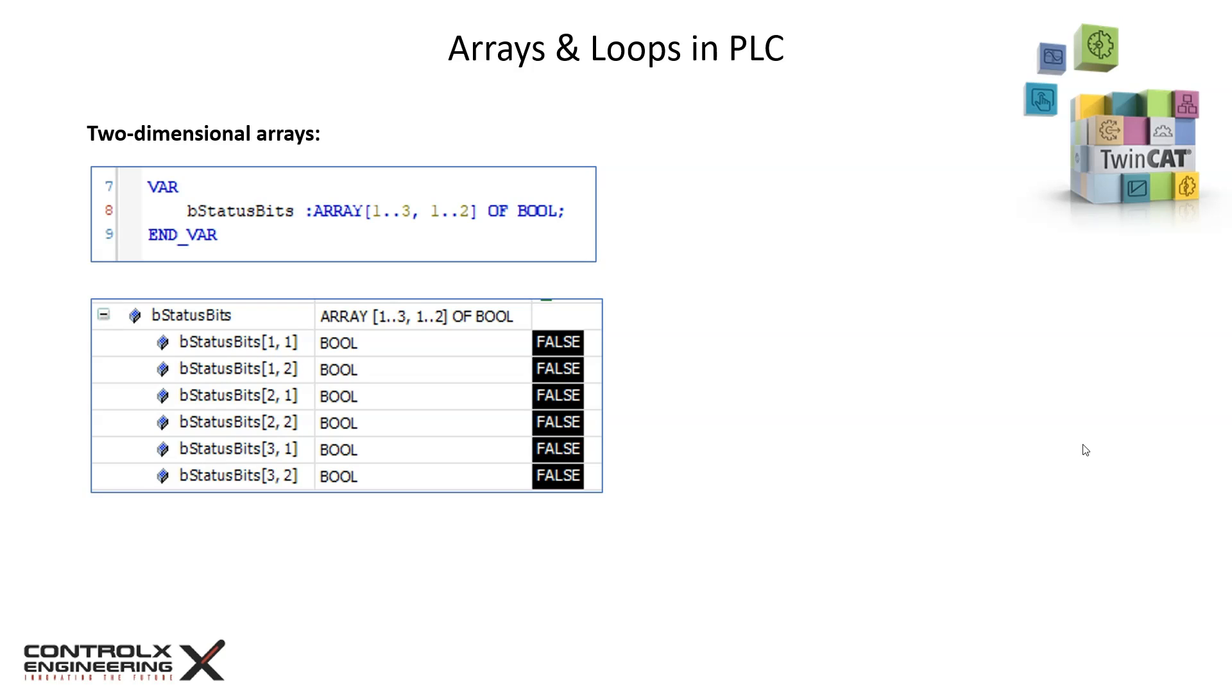Next, let's see how to declare two-dimensional arrays. The range for the second dimension is declared in the same way as before, but using a comma to separate the dimensions. A boolean array in this example has dimensions of three by two. It can thus be considered as a table of three columns represented by the first dimension and two rows represented by the second dimension.